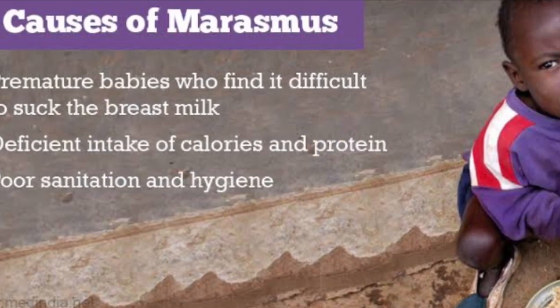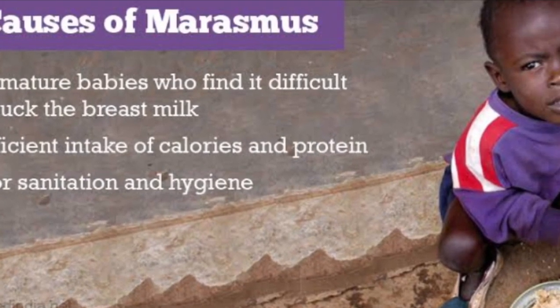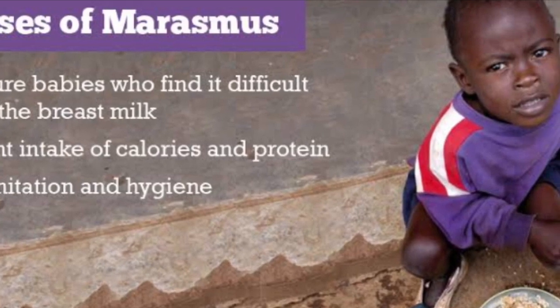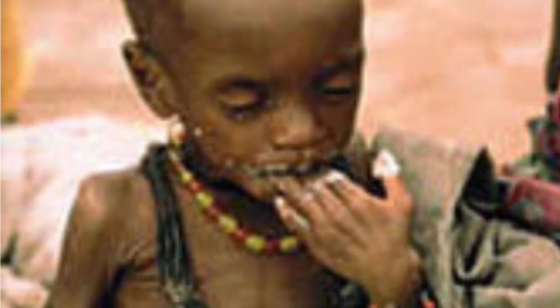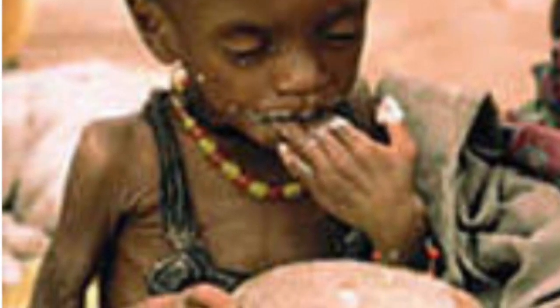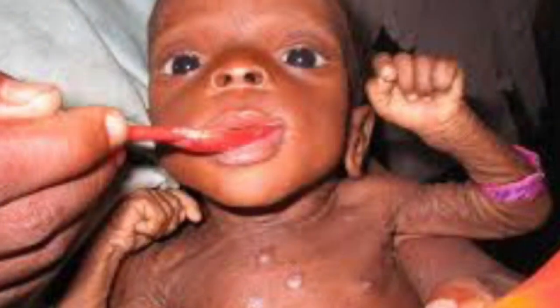Marasmus is caused due to deficiency of protein as well as calories. It is marked by wasting of muscles, emaciation — meaning loss of the buccal pad of fat — skin of buttocks hanging down, no edema, and marked stunting. It is caused due to poor nutrition, commonly in babies who cannot suck milk.